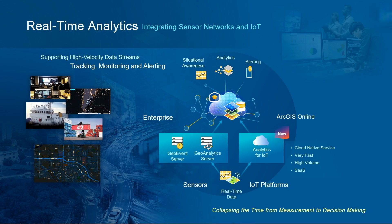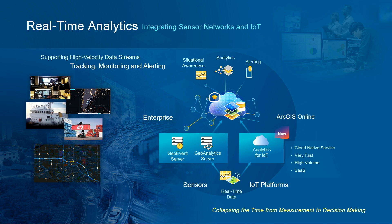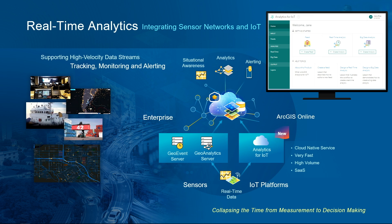ArcGIS allows you to visualize and analyze real-time information from IoT sensor networks. Both real-time analytics and batch analytics against archived data are supported. This has been available in ArcGIS Enterprise via the GeoEvent Server and GeoAnalytics Server. It's now available as a SaaS solution via the Analytics for IoT extension to ArcGIS Online, using a cloud-native implementation to scale out processing to deal with both large velocities and large volumes of data. Users can connect to feeds immediately viewable as stream layers, configure real-time analytic pipelines, and schedule recurrent batch analytics against archived feed data.